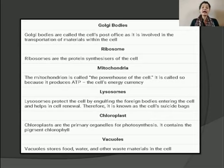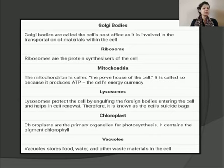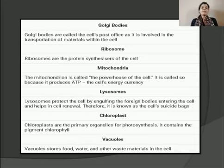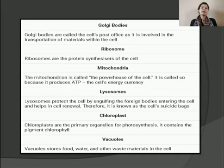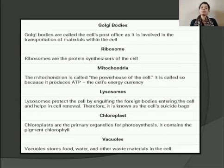The Golgi bodies are called the cell's post office and are involved in the transportation of material within the cell. Proteins synthesized in the endoplasmic reticulum come to the Golgi bodies for packing. The Golgi bodies help in packing proteins into membrane-bound vesicles, which are stored and when needed move to the plasma membrane, fuse with it, and expel the contents to other cells that require proteins.